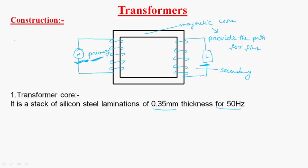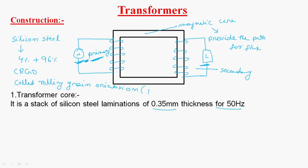To design the magnetic core of the transformer, we use silicon steel material, in which 4% silicon and 96% steel are used. This silicon steel is processed — that is CRGO, called Cold Rolling Grains Orientation. It is a special process by which the silicon grains are oriented to allow the maximum amount of flux through the magnetic core.